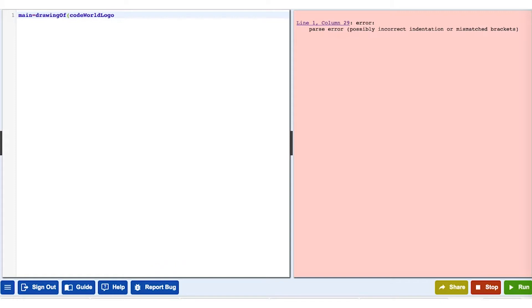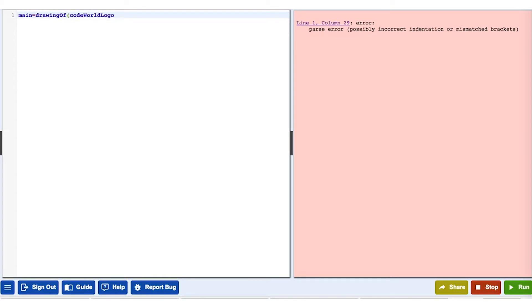Now let's look at the error message and see what it's telling us. It gives us the line and column number of the error. Then it says, parse error, possibly incorrect indentation or mismatched brackets. Parse error means that there is a punctuation problem. Either you spelled something wrong, forgot a bracket or comma, or something like that. In this case, it tells you specifically that you either have incorrect indentation or mismatched brackets, and the parentheses are brackets. So we add it, push run, and the problem solved.